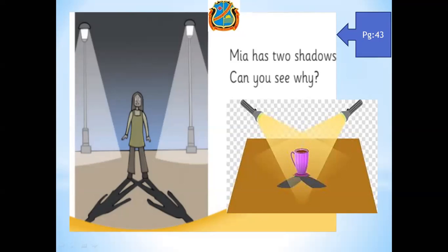Can you write in the chat box what you have seen? Write the reason why two shadows are coming. One is a picture and one is a cup. You can see there are two torches — two light sources, like street lamps. And two shadows are coming. Why? You can reply in the chat box — why are there two shadows?